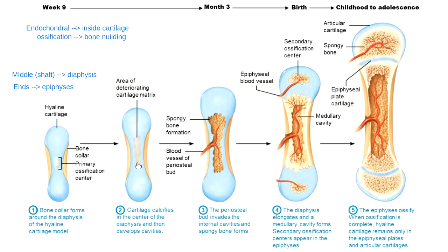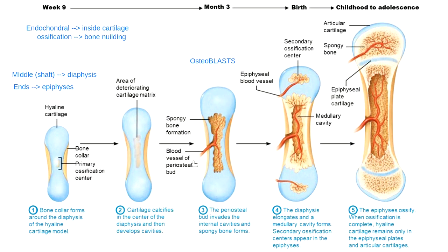Inside the diaphysis, the cartilage cells are just grabbing any calcium they can — this is called calcification. All that means is that the cartilage cells get desperate and start putting down calcium. It's really weak, bad bone. But calcifying sends a signal to send a blood vessel inside the diaphysis, which brings with it the cells that know how to build bone: osteoblasts. These bone builders start to build good bone tissue in the middle of the bone.